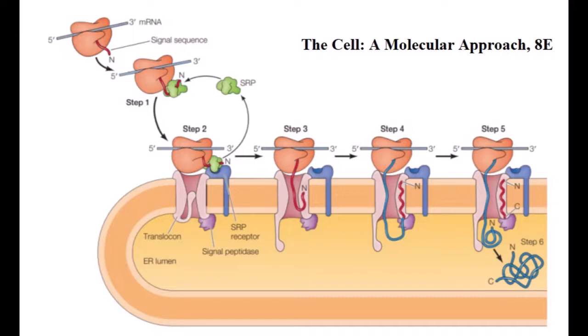In the fourth step, translation resumes and the signal sequence is cleaved by signal peptidase present inside the endoplasmic reticulum membrane. In step five, continued translation drives translocation of the growing polypeptide chain across the membrane.